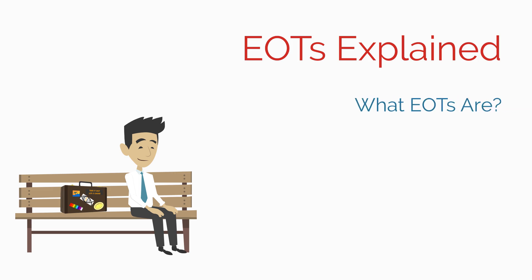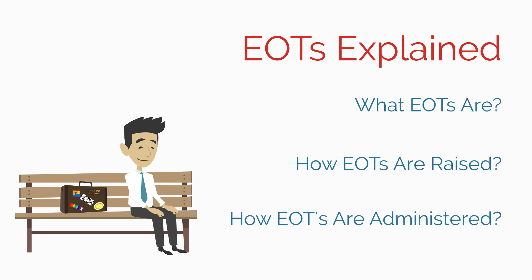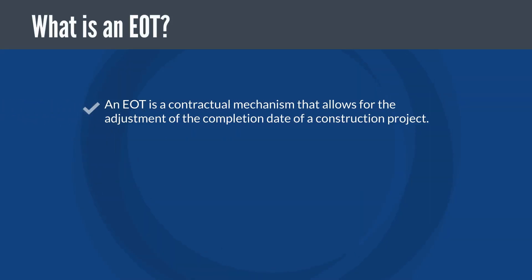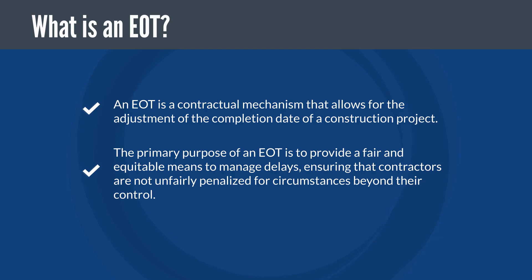In this video, we'll explore what EOTs are, how they are raised, and how they are administered. An extension of time is a contractual mechanism that allows for the adjustment of the completion date of a construction project. It is a formal process provided within construction contracts to account for delays that are beyond the control of the contractor. The primary purpose of an EOT is to provide a fair and equitable means to manage delays, ensuring that contractors are not unfairly penalised for circumstances beyond their control.